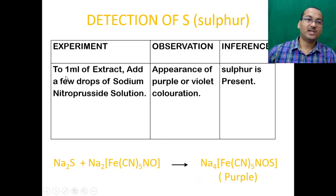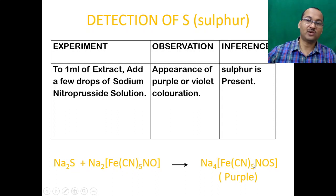Alternatively, take 1 ml of the Lassaigne extract and add a few drops of sodium nitroprusside solution (Na₂[Fe(CN)₅NO]). This reacts with sodium sulfide to give sodium thionitroprusside, which is purple or violet in color, confirming that sulfur is present.